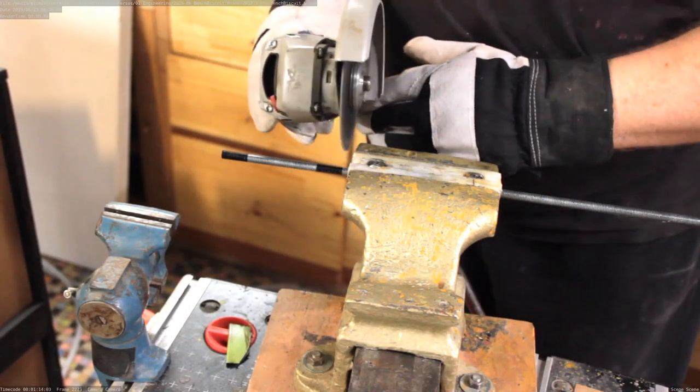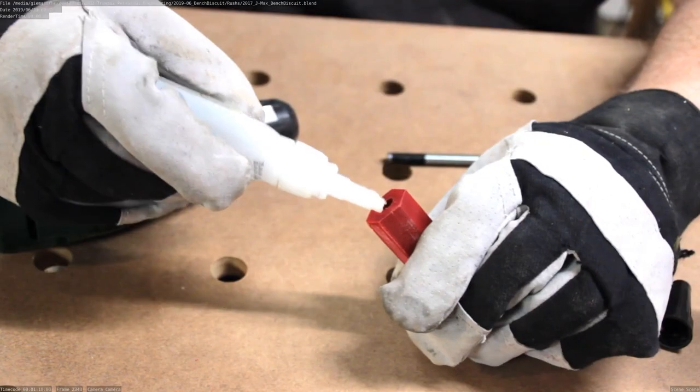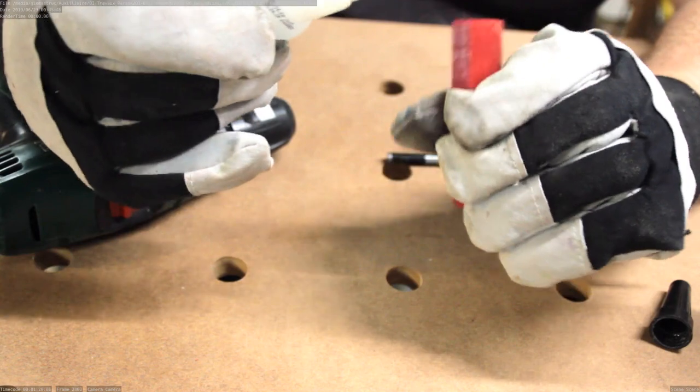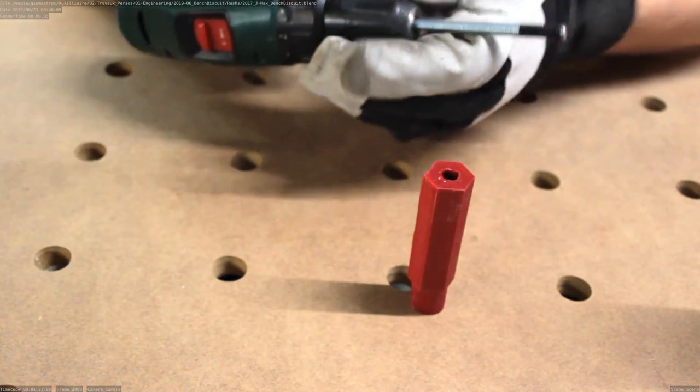The Festool MFT compatible post needs 8mm threaded rods. I add some seal glue and drive the rod in.